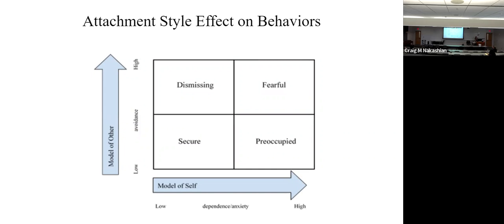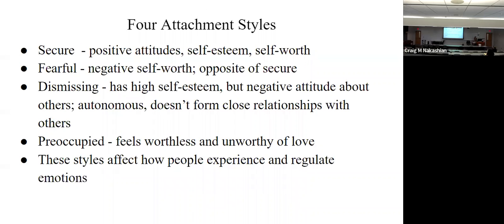Here's a quick model showing the four different attachment styles I studied: dismissing, fearful, secure, and preoccupied. If you have low dependency, low anxiety, and low avoidance, you're going to fall into the secure category. If you go up on either of these, you end up in dismissing, fearful, or preoccupied categories. Clearly, secure is where we're trying to head. The secure attachment style is the desirable positive attitude — you have self-worth, positive self-esteem. Fearful is just the opposite of the secure. Dismissing is a negative attitude about others, and preoccupied — you just feel worthless and unworthy. Those four attachment styles affect how people experience and regulate emotions.